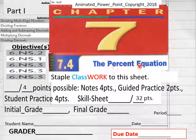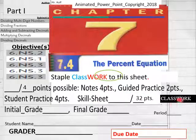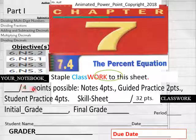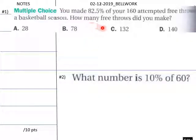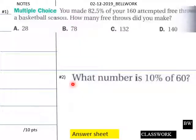7.4, the percent equation. We have a 32-point skill sheet today and we have a 4-point notebook sheet today. Teachers, here's today's bell work for your students. Give your students five minutes to do this.